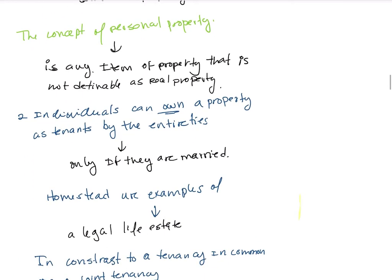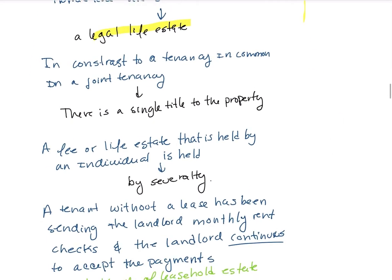Personal property is defined as any item of property that is not definable as real property. Two individuals can own property as tenants by the entirety only if they are married — that is the only way. In contrast to tenancy in common, in a joint tenancy there is a single title to the property.